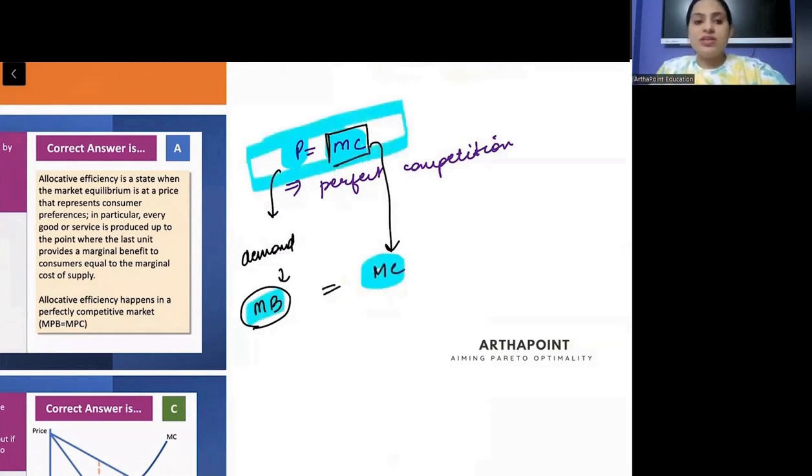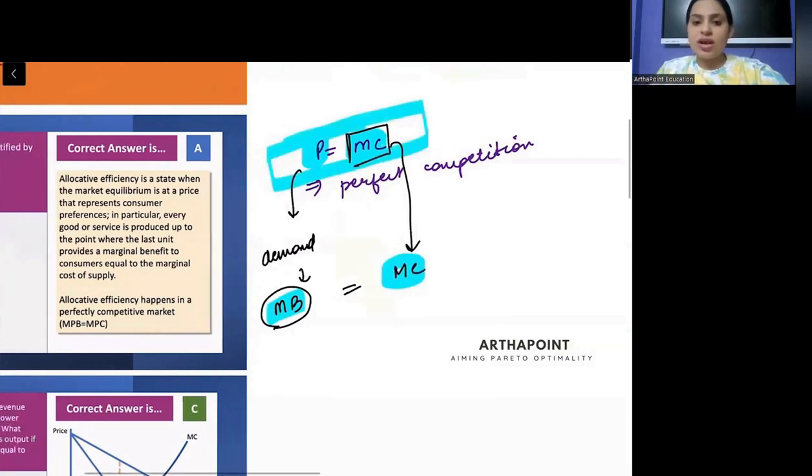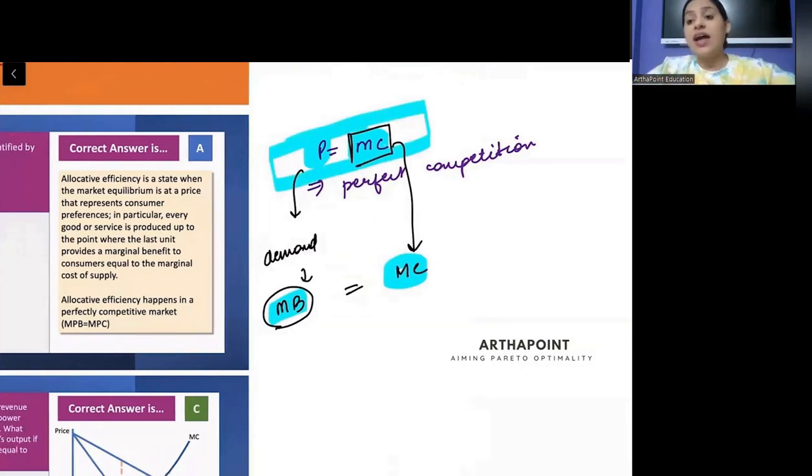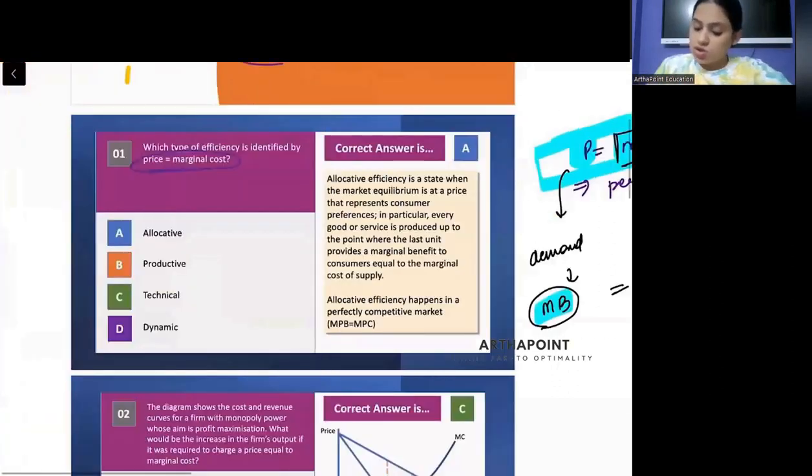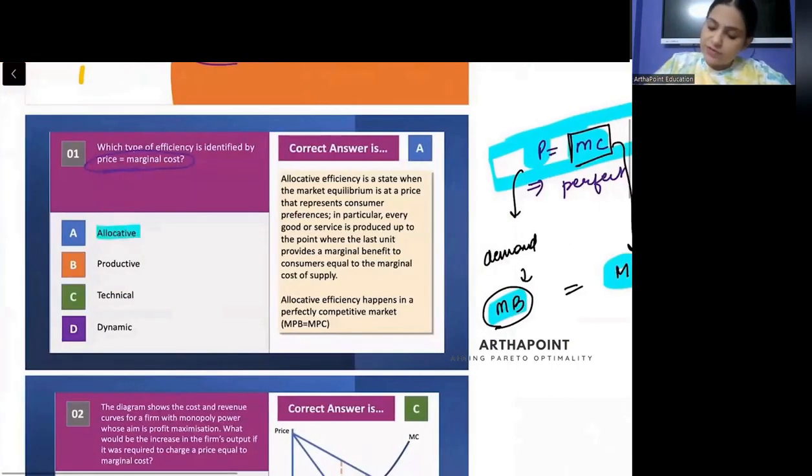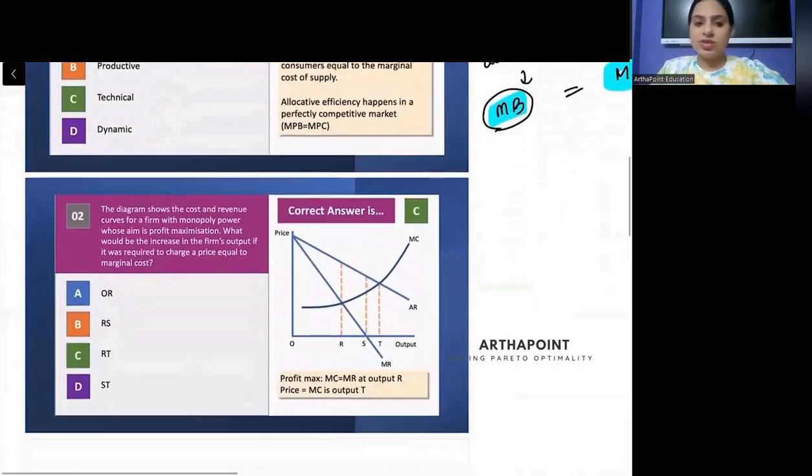So when this is achieved, this is known as allocative efficiency, that resources are allocated properly. So this is known as allocative efficiency. So the answer is A. Come to the next question.